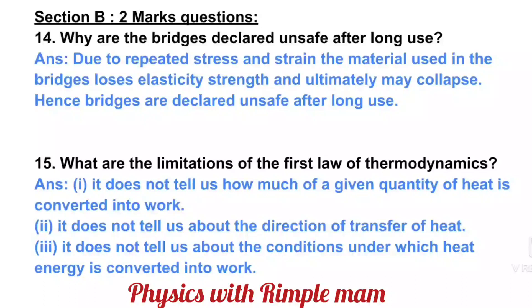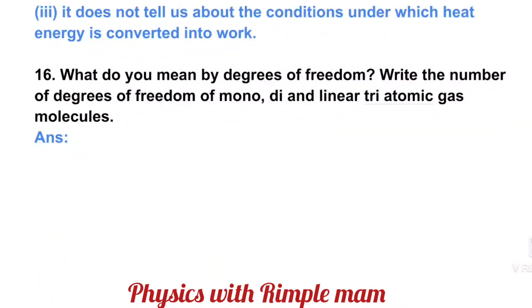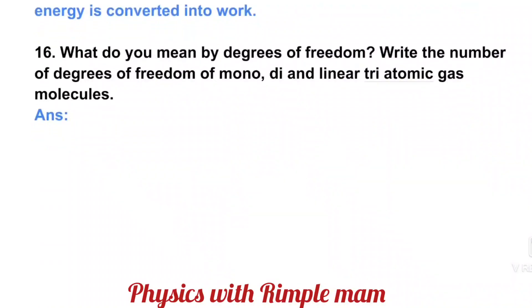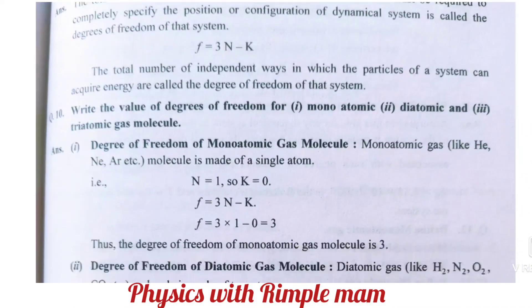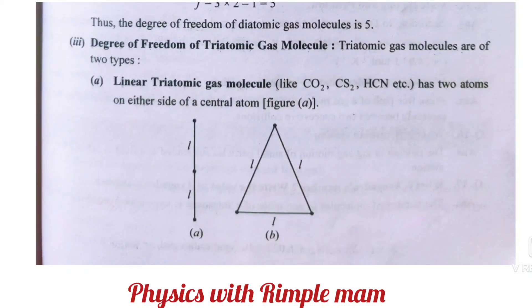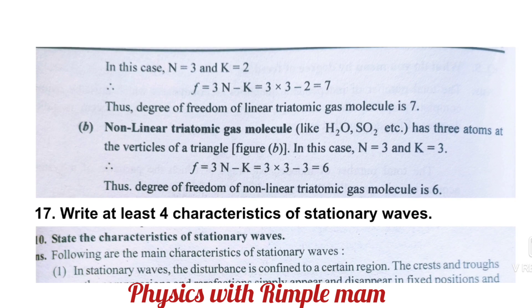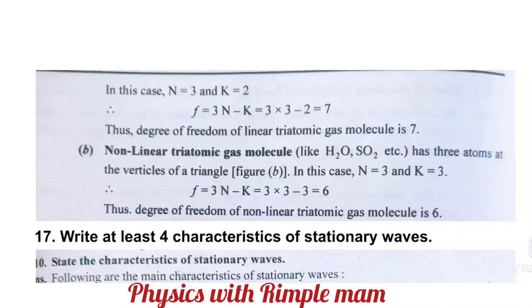Due to repeated stress and strain, the material used in bridges loses elasticity strength and ultimately may collapse. What happens is that the stress and strain increase so much that the elasticity slowly decreases. It decreases so much that eventually it breaks or collapses. That's why bridges are declared unsafe after long use. Next: What are the limitations of the first law of thermodynamics? This is simple - just learn these limitations.